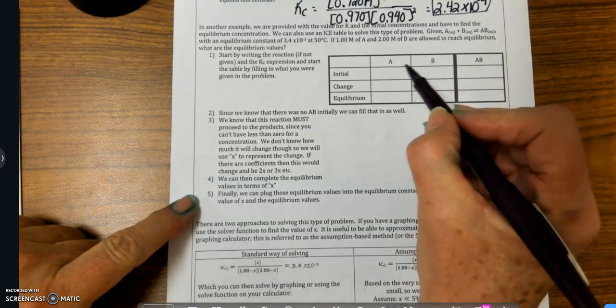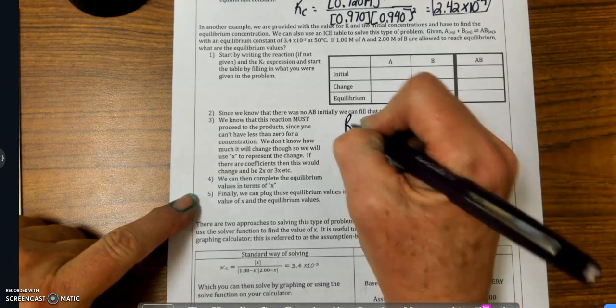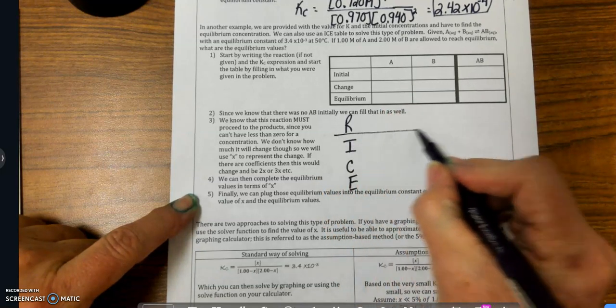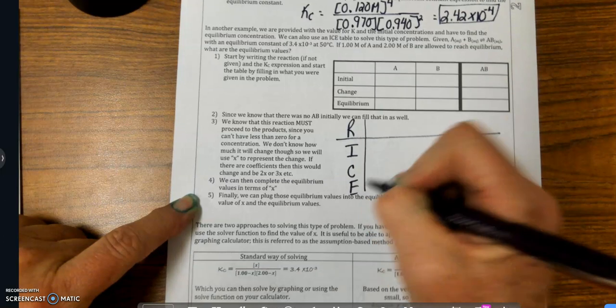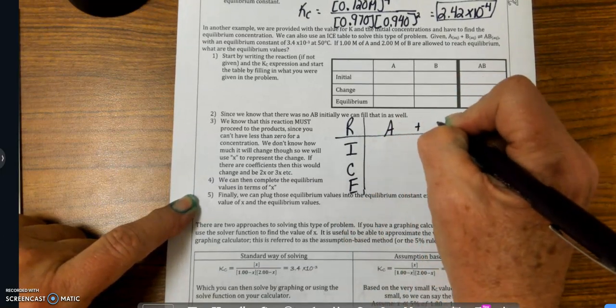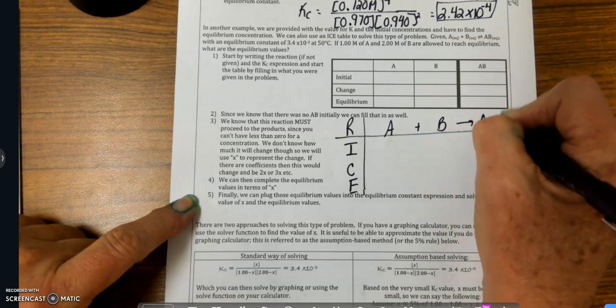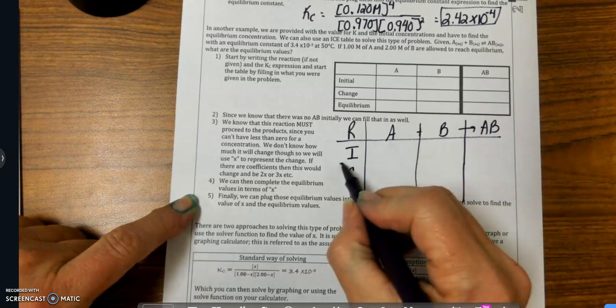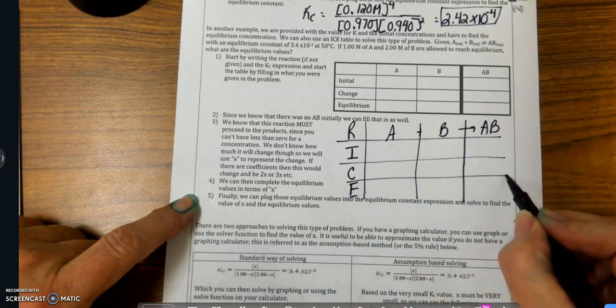It says, here's my reaction, so I'm going to write this out. I've got A plus B goes to AB, and I can put this like that, and like that.